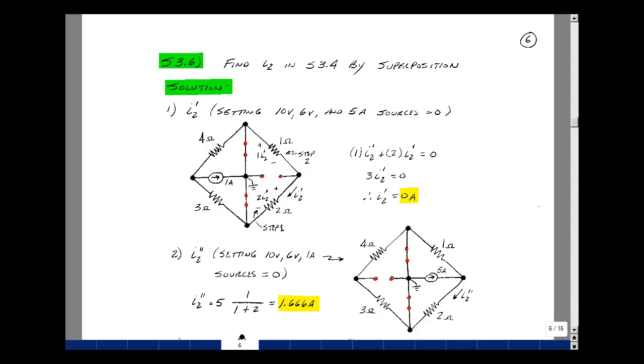One of the advantages of superposition is that by setting sources equal to zero, some parameters do become zero. Even though this is more steps, sometimes the calculations are fairly simple.